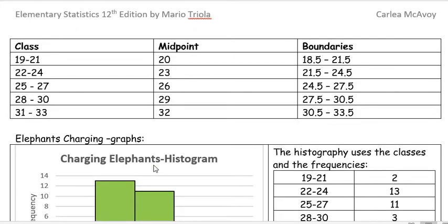If we go back and look at that, we have 19 to 21. But what is halfway between 21 and 22? That's 21.5. What's halfway between 24 and 25? That's 24.5. That's how we got those boundaries.